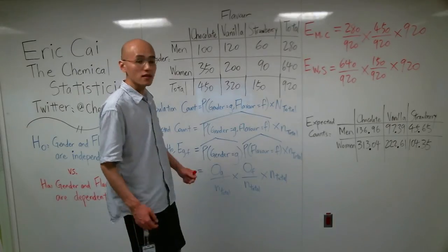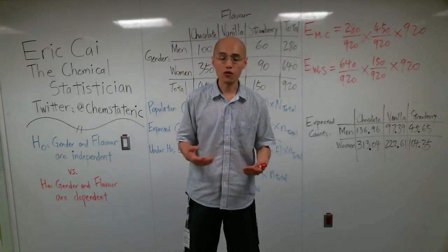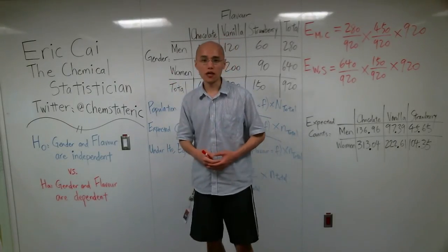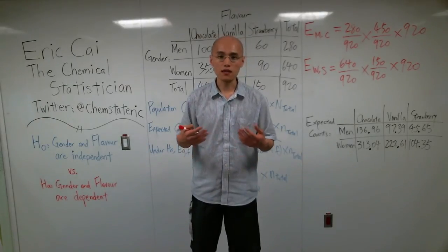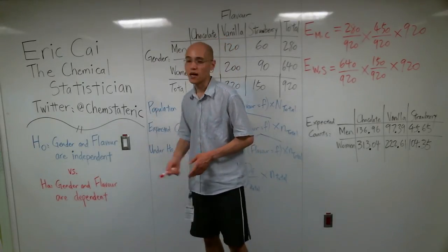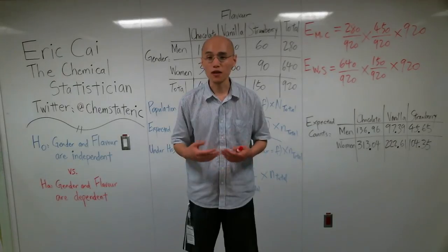All right. So this is how you calculate expected counts using joint probabilities. As always, you can visit my blog, The Chemical Statistician, to get your short lessons and in-depth tutorials on statistics, chemistry, machine learning, and math. You can also follow me on Twitter, at ChemStatEric. Thank you for watching this video, and I hope that you learned something useful today.